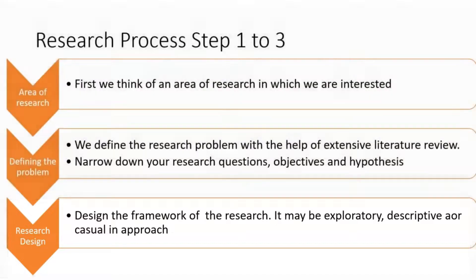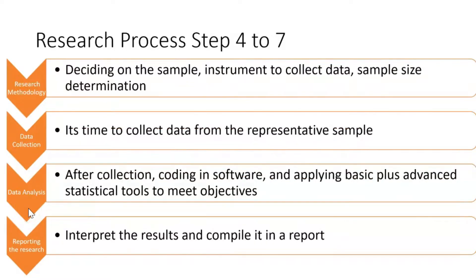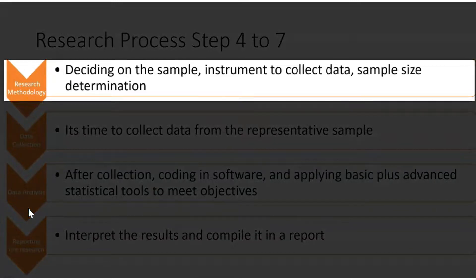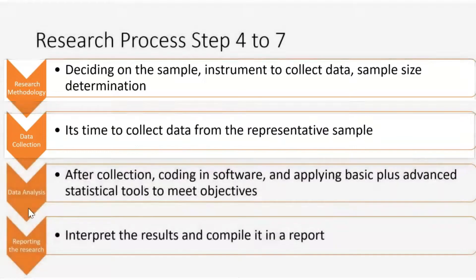So step one is defining the area of interest, step two is identifying the problem, and step three is creating the framework for the research problem. After designing the research design in step three, we move to step four, which is all about the methodology of the research. In the methodology, three things are very important: first, sample determination — on whom you are conducting the research; second, the right sample size or representative sample size; and third, the development of the instrument for collecting data. You need to develop that instrument, and this will be covered in week four.